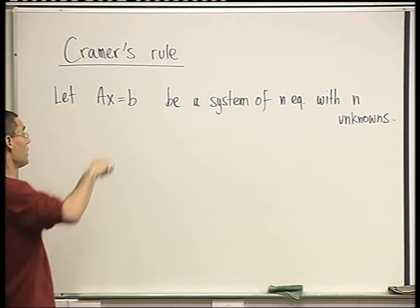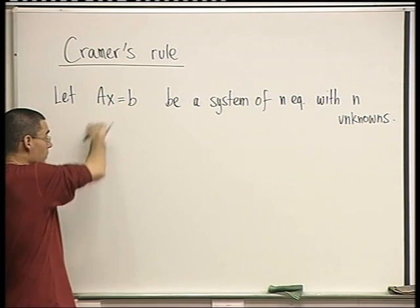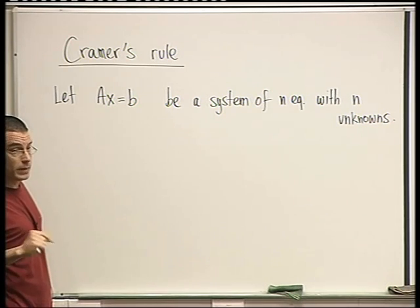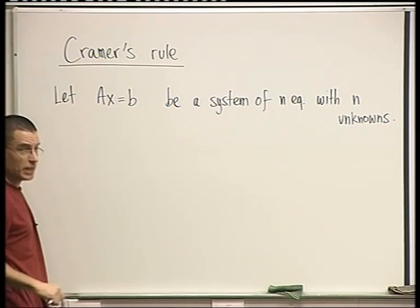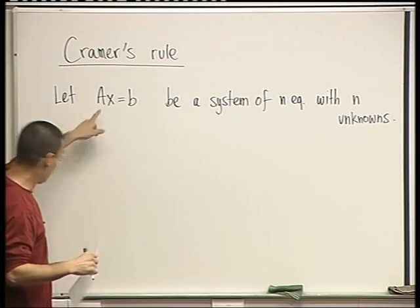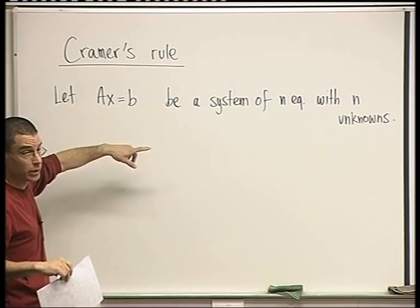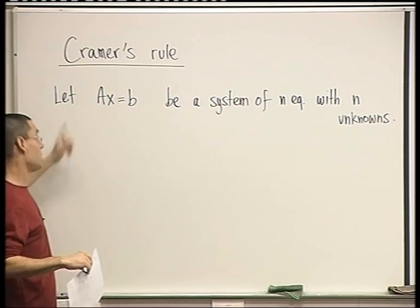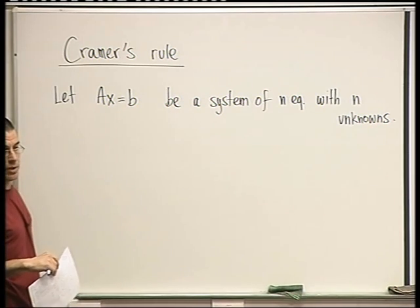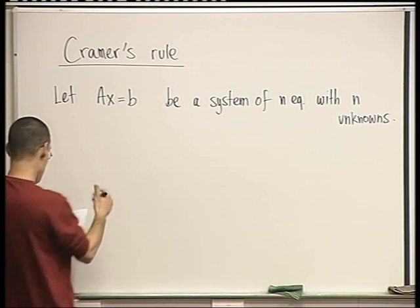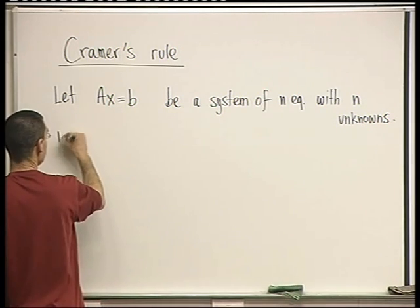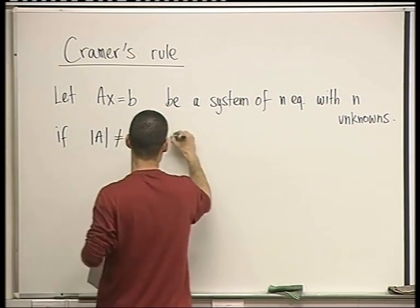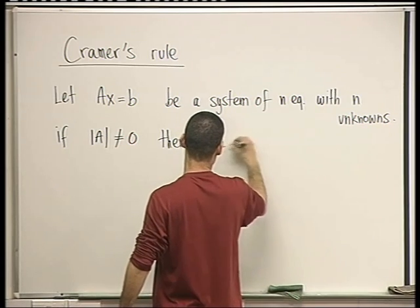And we know that if A, if the determinant of A is not 0, then there's a unique solution. That was two of the six equivalent statements that we had, right? If the determinant of A is not 0, then the rank of A is full. A is invertible. And one of the other ones, I don't remember which number, was that Ax equals B has a solution for every B. So if the determinant of A is not 0, then the system has a unique solution.